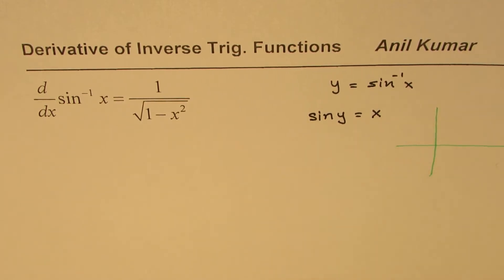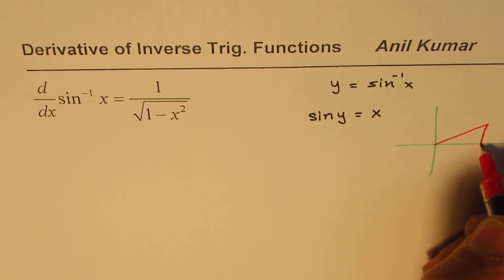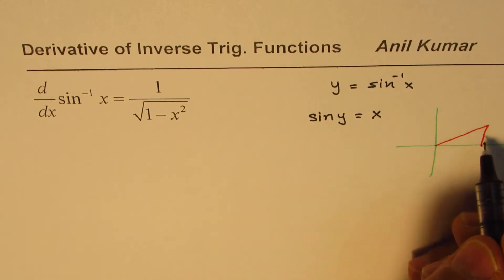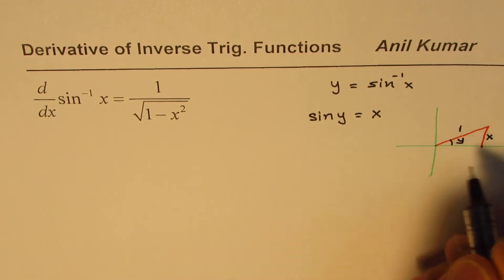Let me make that triangle here. When we say that sine y is x, let me take an acute angle. So if we make a triangle like this, in this triangle, if sine y is x, then the ratio of opposite to hypotenuse is x. And this angle is y for us.